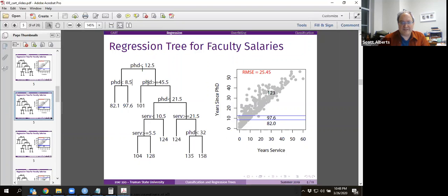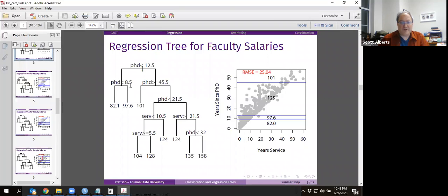When we add one more split, that's going to be people whose PhD is more than 45.5. It's a little bit funny that those people actually make less. But if you remember the chart from last time, the chart did kind of curve back down. That's now the second level of the tree. And now we're going to split again over here between 21.5 years. The RMSE continues to get better.